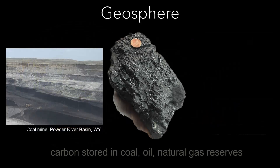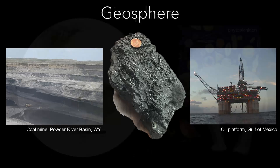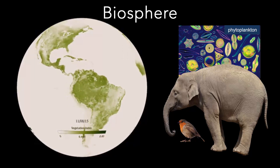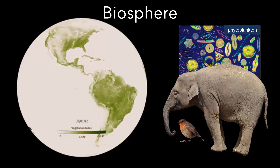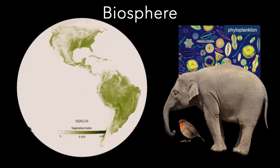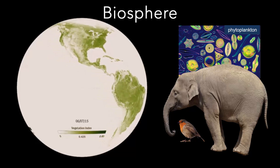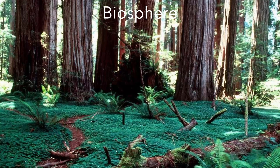There's more carbon stored in the geosphere's fossil fuel reserves than there is throughout all of Earth's biosphere. The biosphere is composed of all the living organisms on the planet. This is everything from vegetation on the continents, to microscopic phytoplankton in the oceans, and familiar complex organisms like elephants and birds. And let's not forget humans.